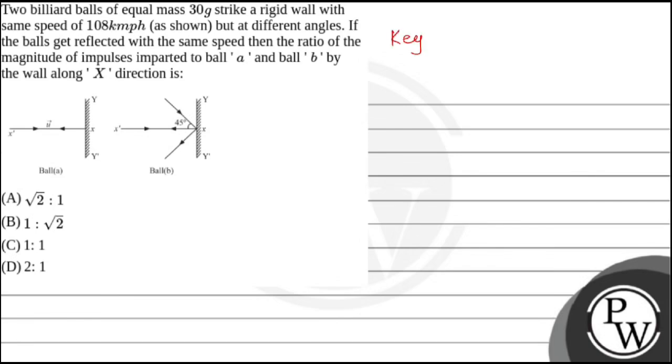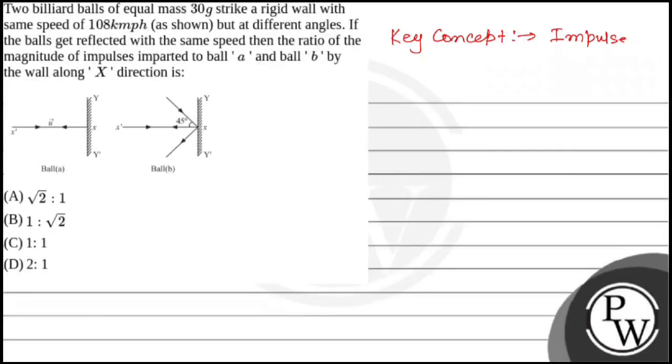So here the key concept is impulse. We can write the impulse J equal to delta P. So in the first case, what will happen for ball A?